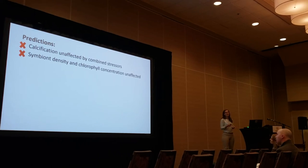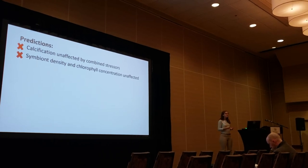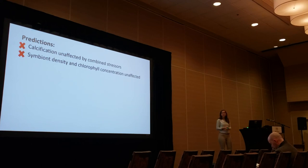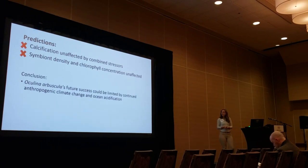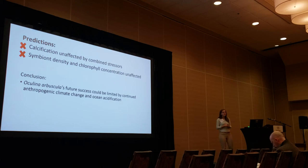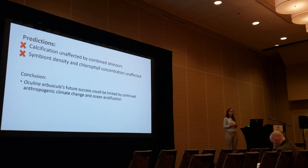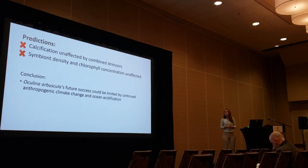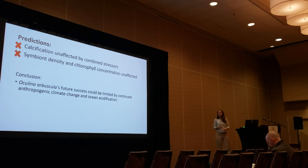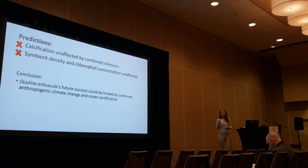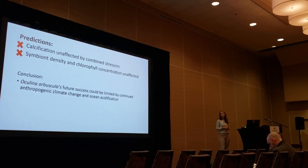We can conclude that pH and temperature are clearly acting synergistically to affect this coral. Though previous studies found that one stressor or the other does not necessarily affect the colonies, clearly together these are impacting Oculina arbuscula. Right now, Oculina arbuscula in Gray's Reef is very common and is a very competitive colony on those rocky outcrops. But in the future, it could very much have its success limited by continued climate change, as temperatures continue to rise and pH continues to drop.